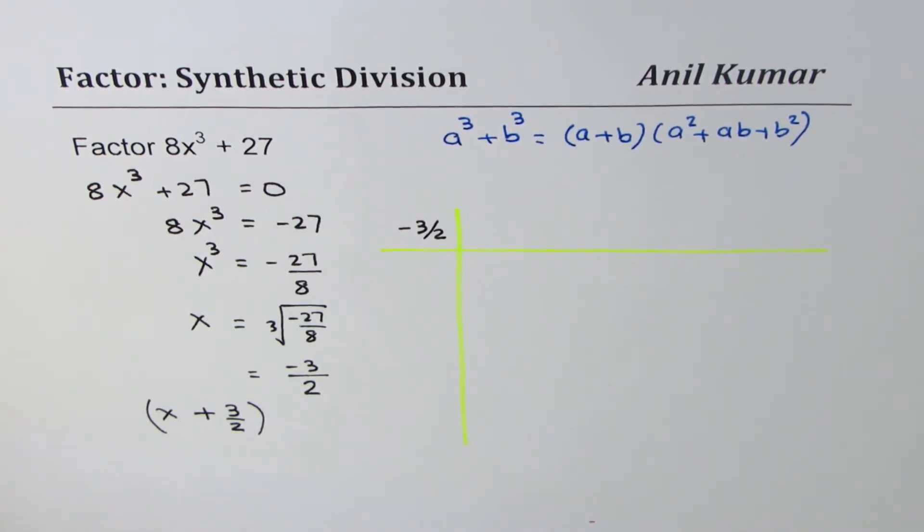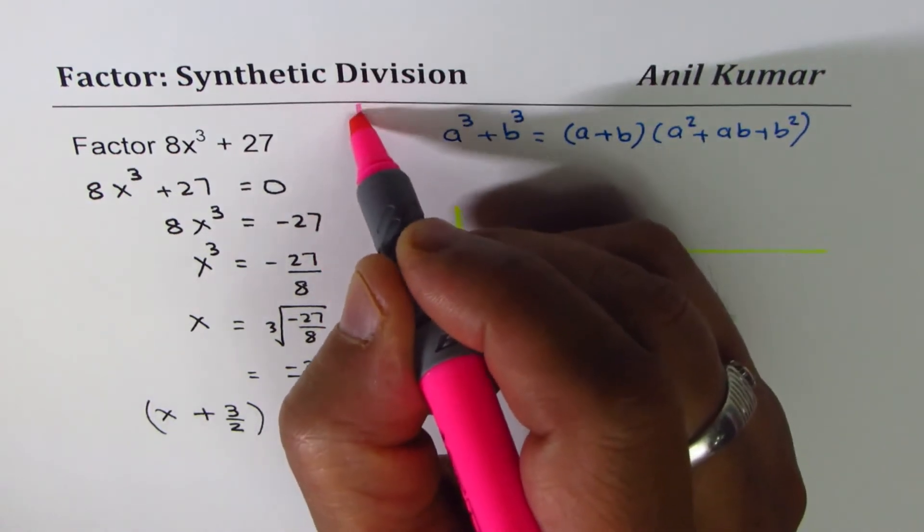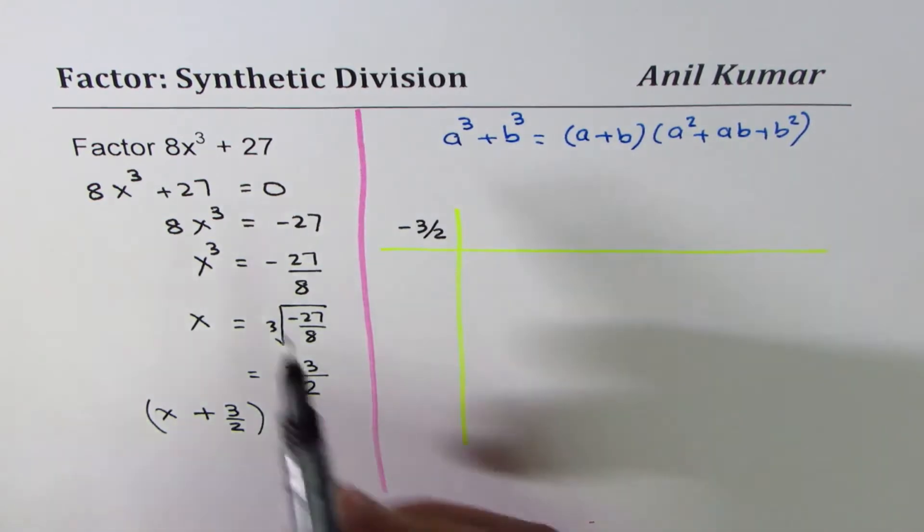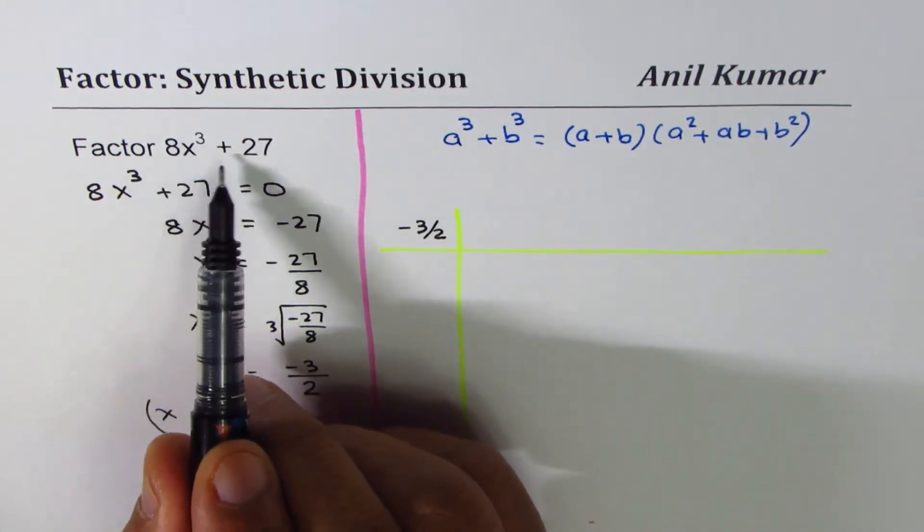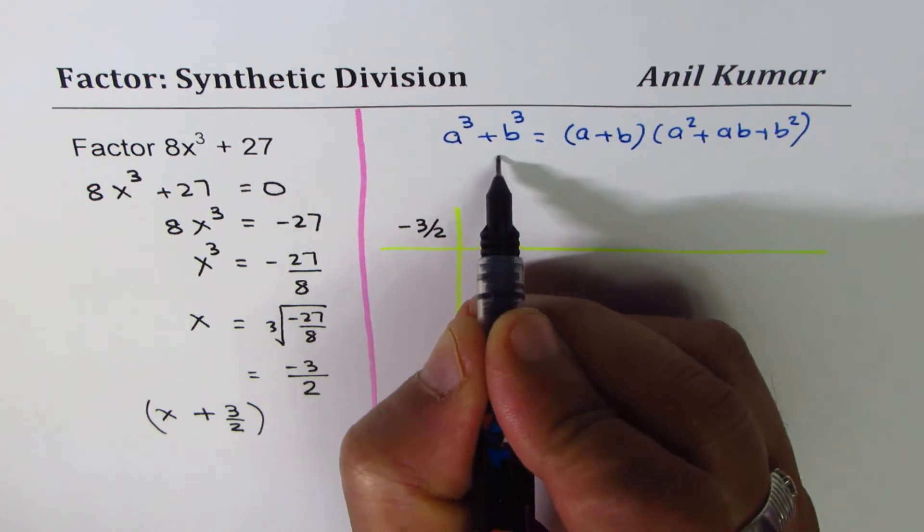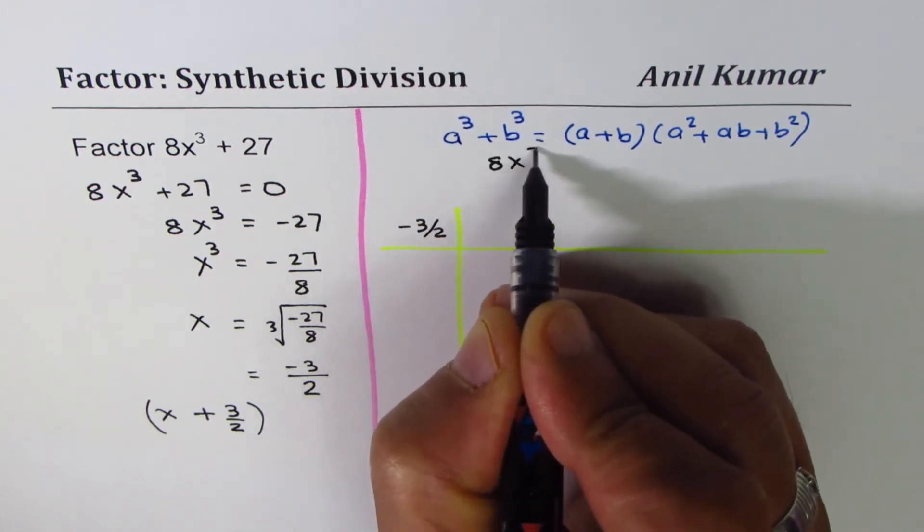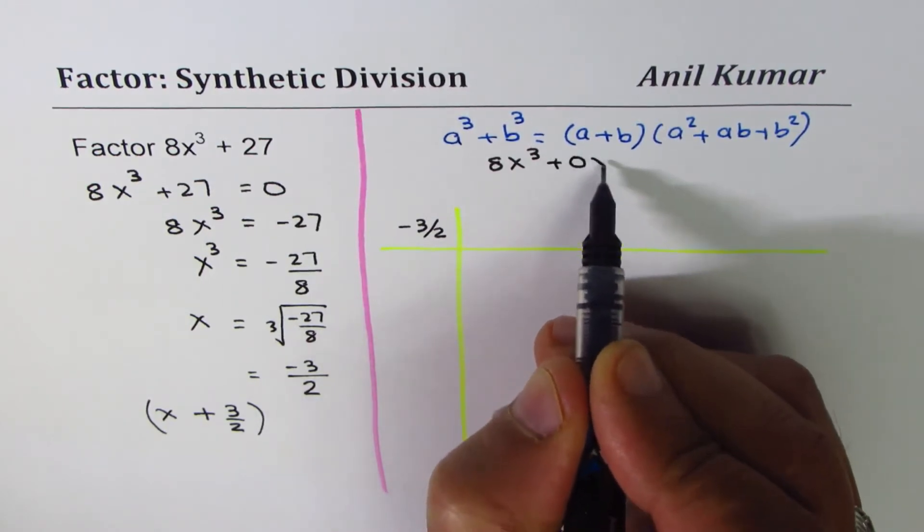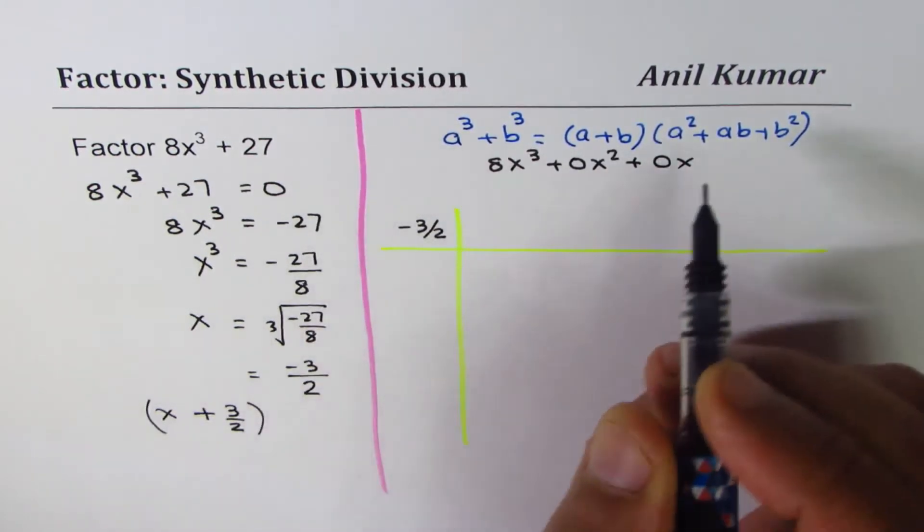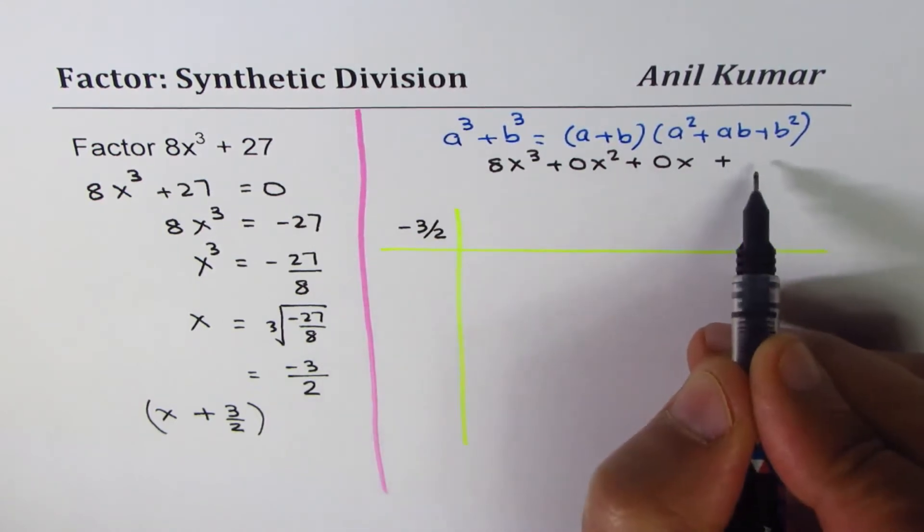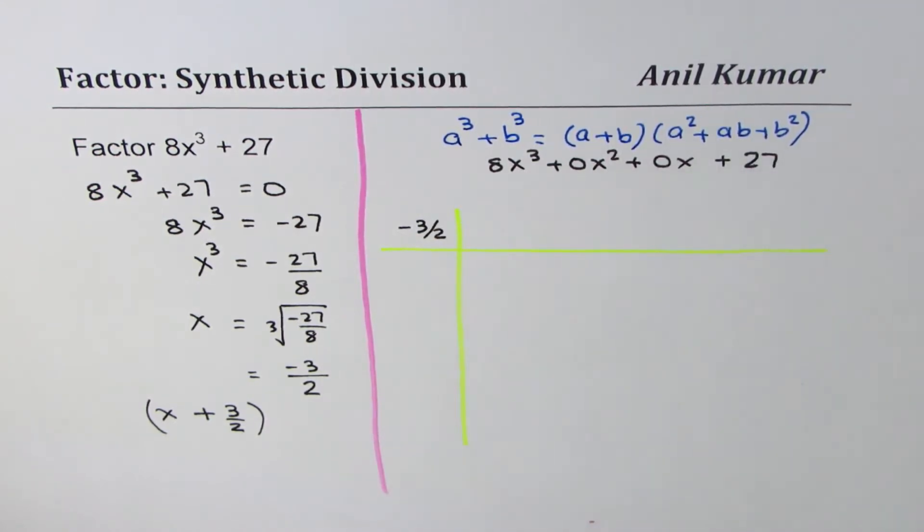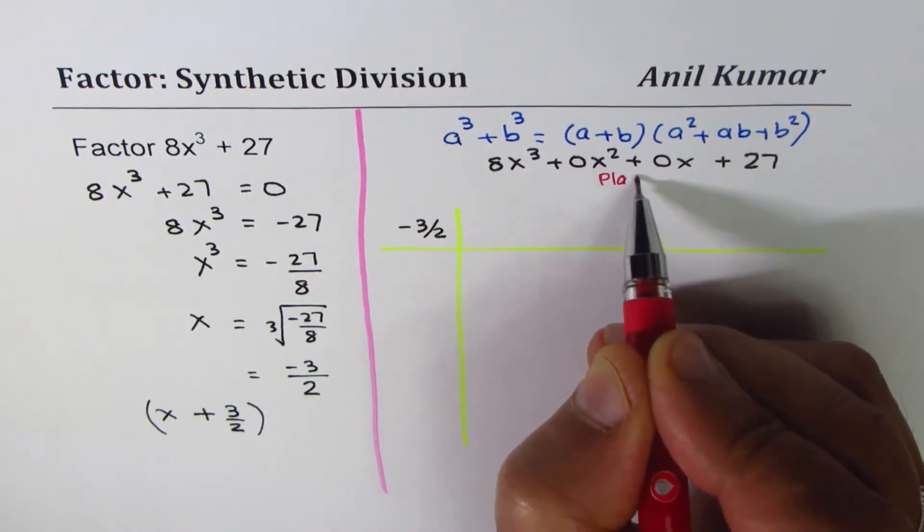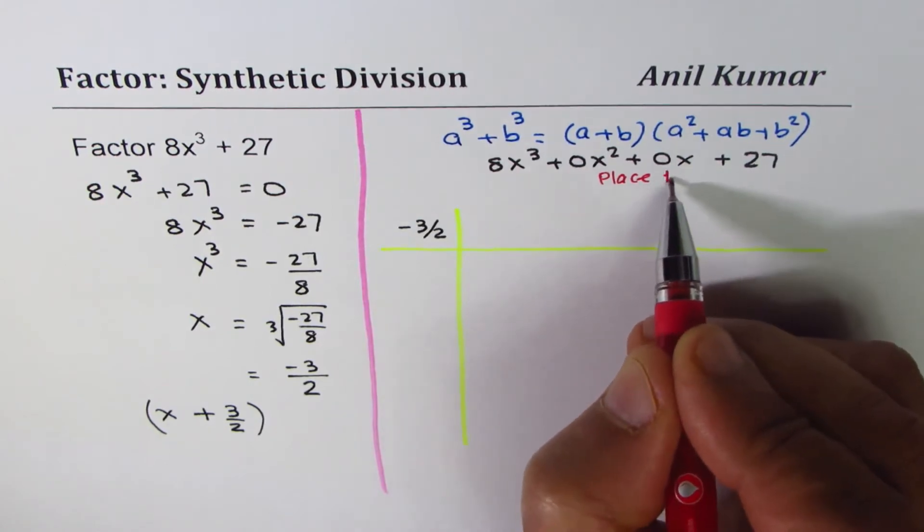What you need to do here is to write down what should come here. Well, 8x³ + 27, let's rewrite. We have 8x³ + 27, so there are some missing terms: 0x² + 0x. These are called the placeholders and they are very important when you perform division.